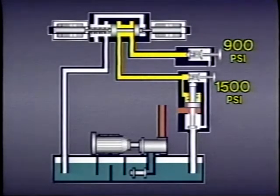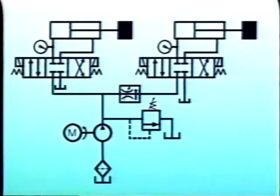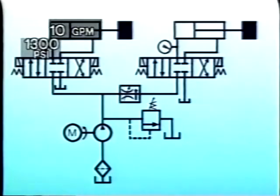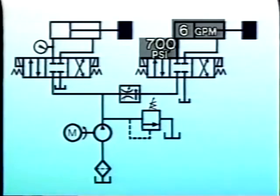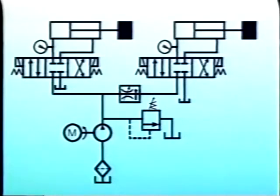Now let's see how a solenoid operated relief valve is used in a circuit. Cylinder A requires a flow of 10 GPM at 1300 PSI to move its load, while cylinder B needs only 6 GPM at 700 PSI. The pump produces an additional 100 PSI to overcome liquid resistance.